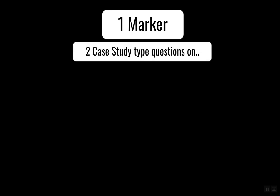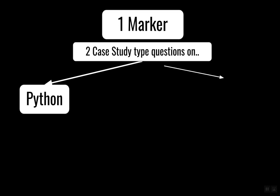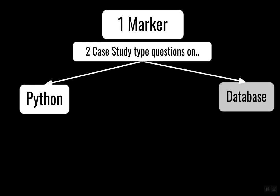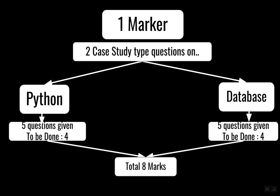Apart from the one-markers, there are two case studies — I call them case studies because questions have been made on the basis of a particular topic. One nice thing about this paper is that they have covered everything. In the one-marker case studies, there are questions from Python and database — not networking. There are five questions from Python of one mark each but you have to do only four, and the same applies to database. That makes up a total of eight marks.